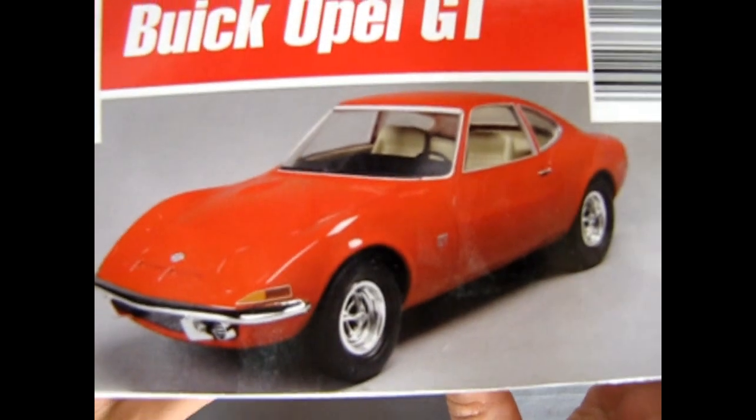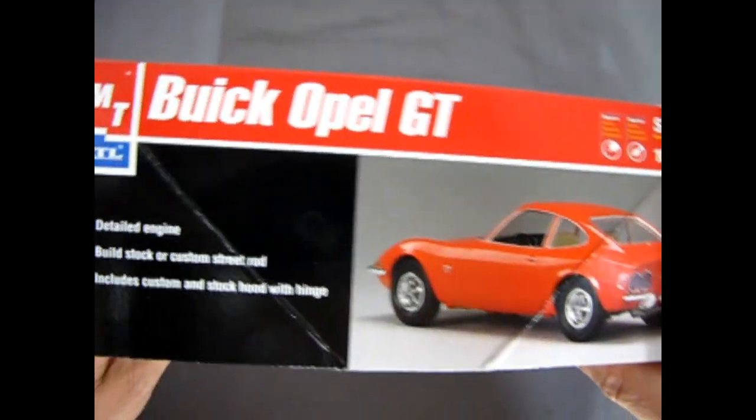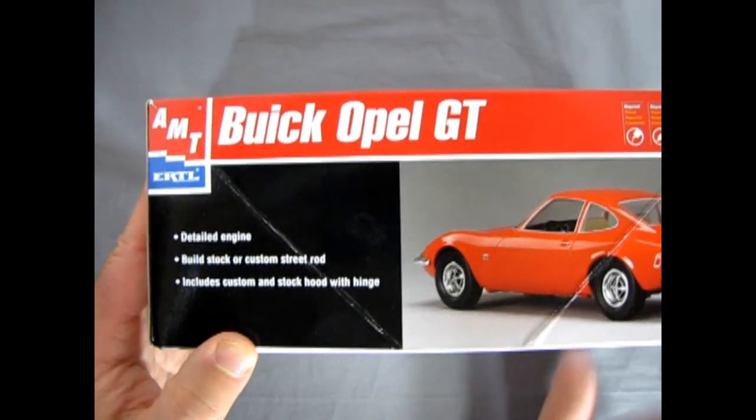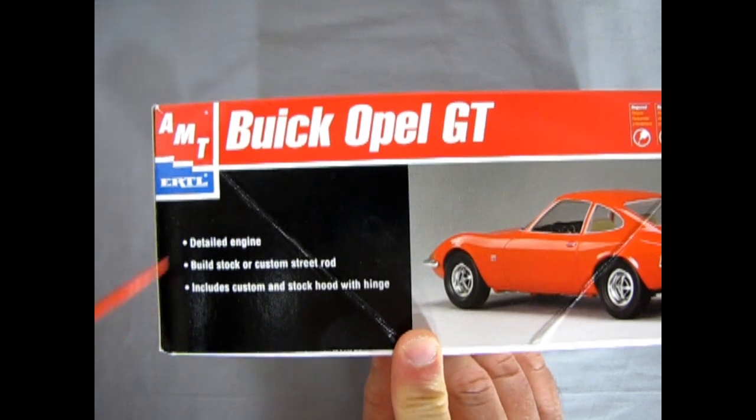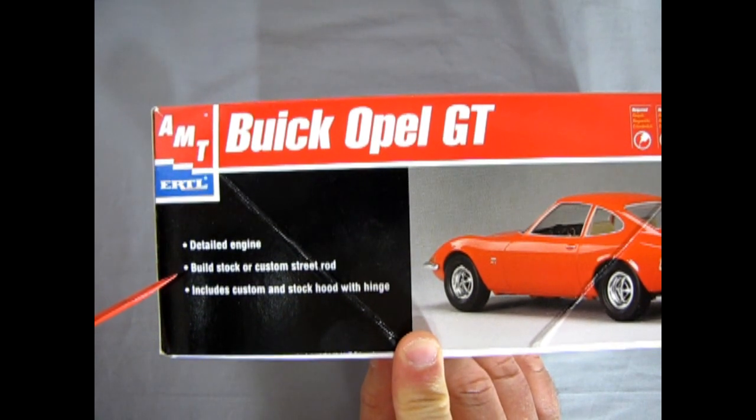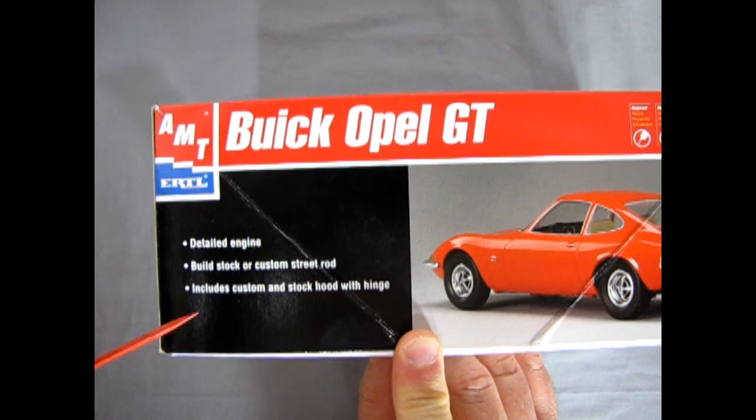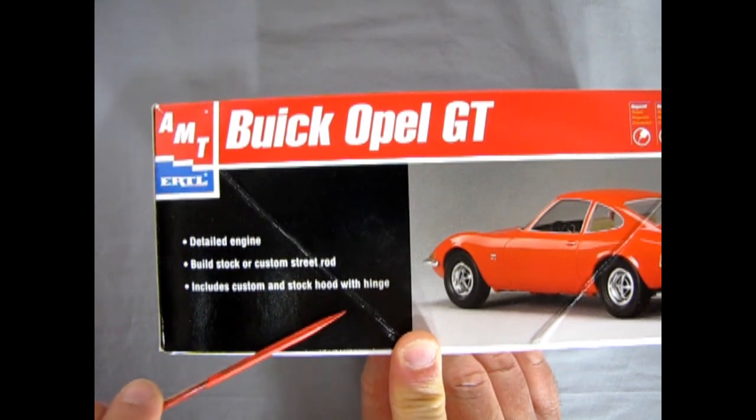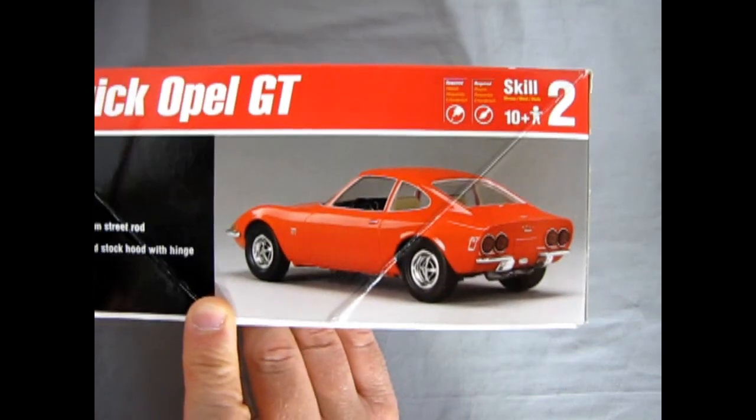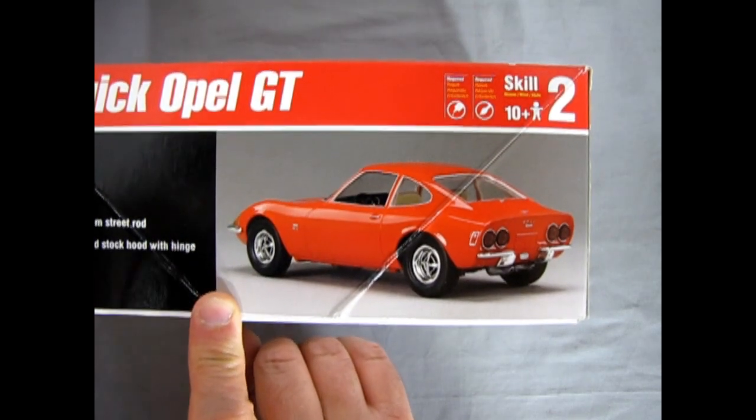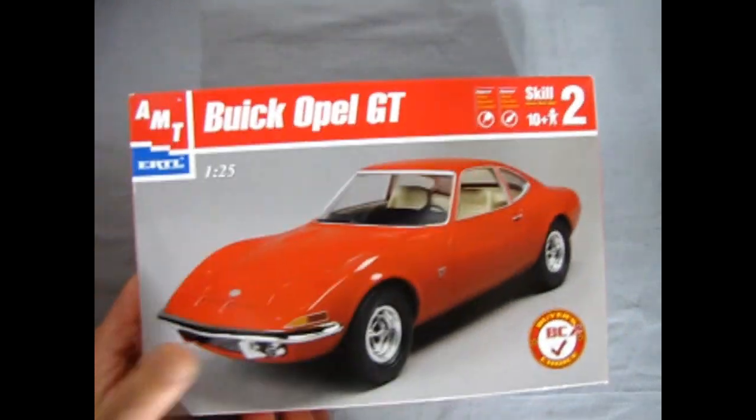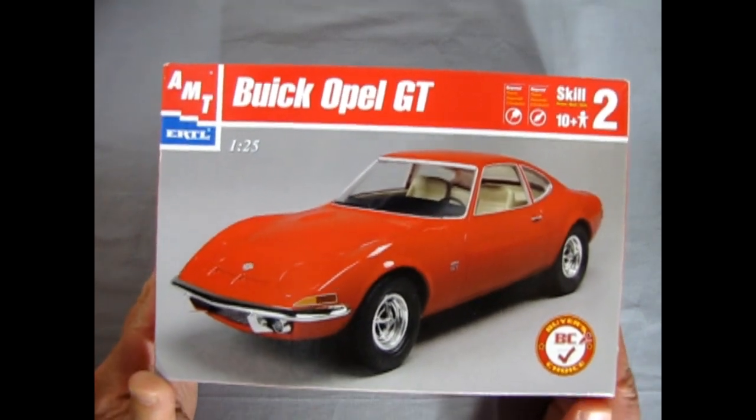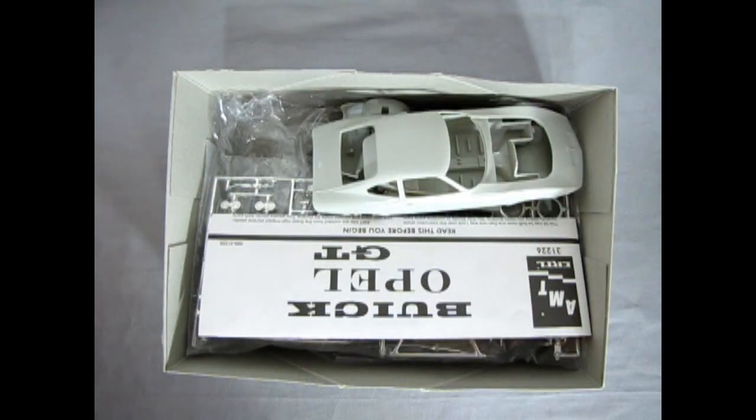You can see the edge of the box. And then on this side we have some special features called out. Basically a detailed engine. You can build this stock or custom street rod. Includes custom and stock hood with hinge. And then there we have the awesome image of the back of the Opel GT. So we'll just turn this around and crack the lid open very quickly.